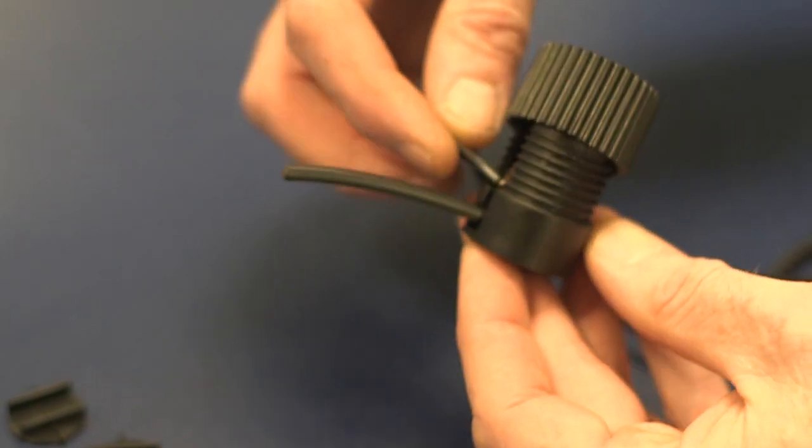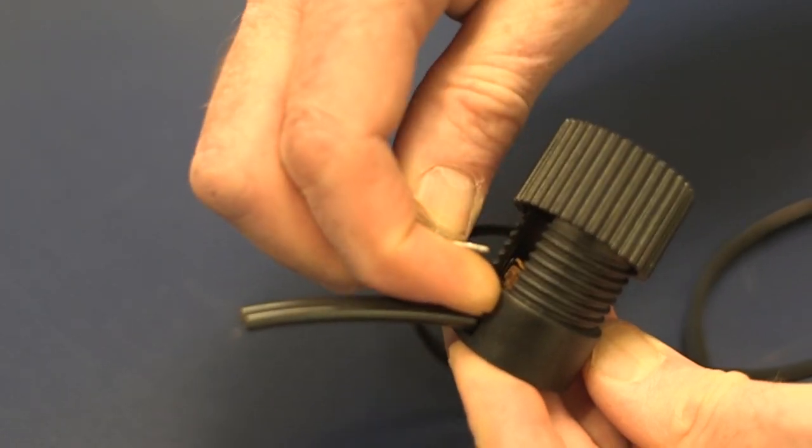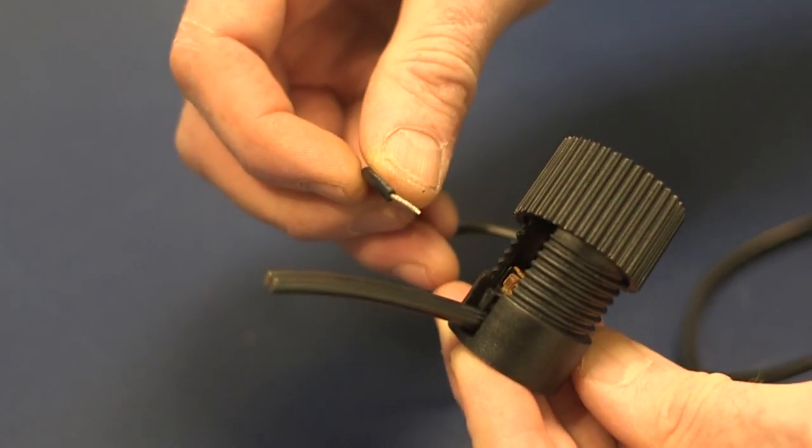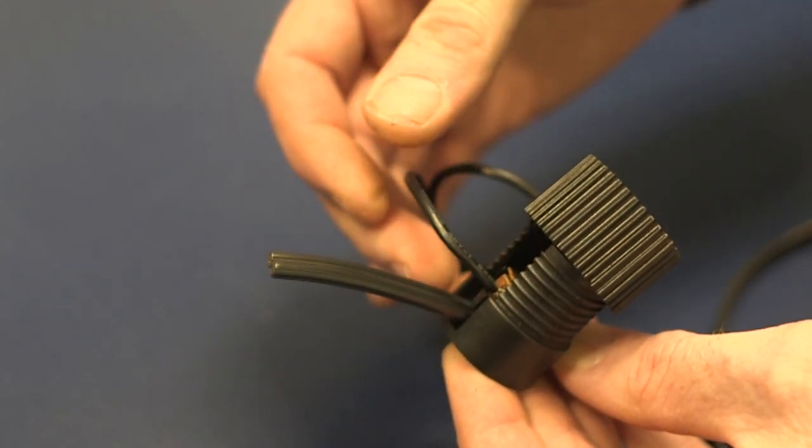Also, if we want to release the wires, there are buttons on the side that we push in while we pull out on the wire. To insert the wire, simply just push the wire into the hole.